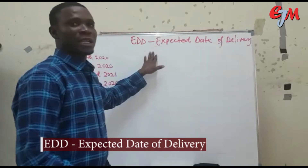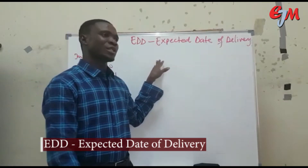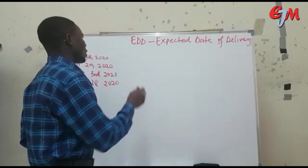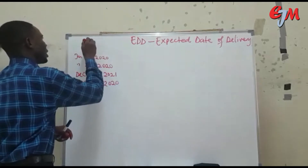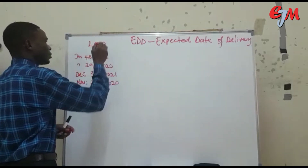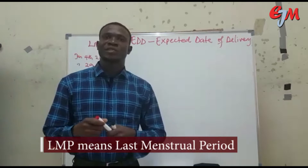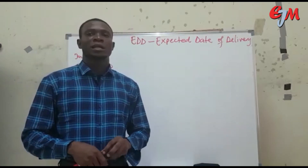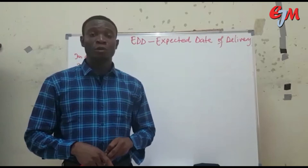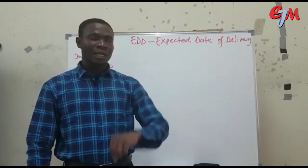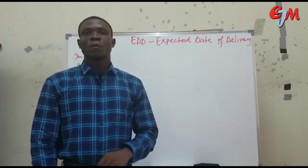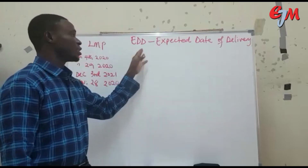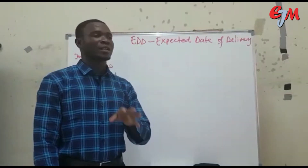In expected date of delivery, the most important thing to know here as a woman is your LMP. The LMP means last menstrual period, and you are expected to know the first day of your last menstrual period. Once you know the first day of your last menstrual period, calculating the EDD will be very easy for you.